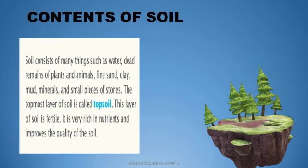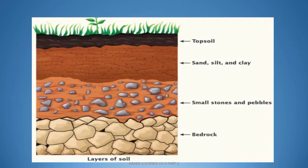We are now going to see the different layers present in the soil. As you can see in the picture, this is the image of layers of soil. The grass is present on top of the topsoil. This dark brown color is the topmost soil, which is very fertile and consists of all the nutrients and minerals that it provides to the plant to grow.